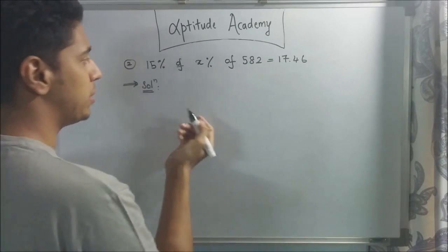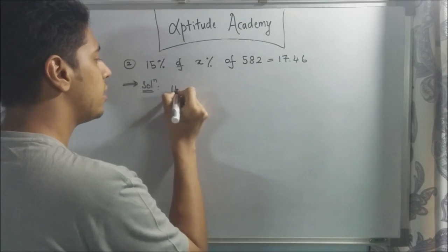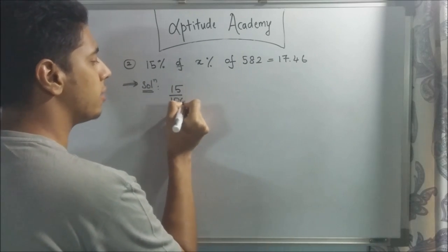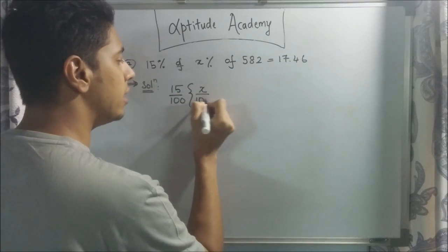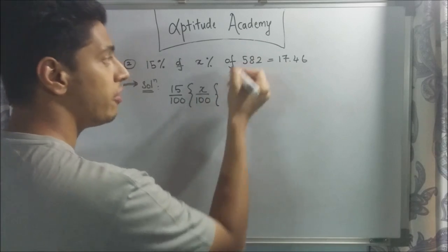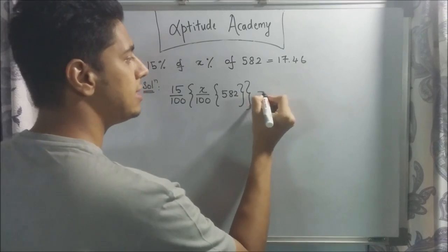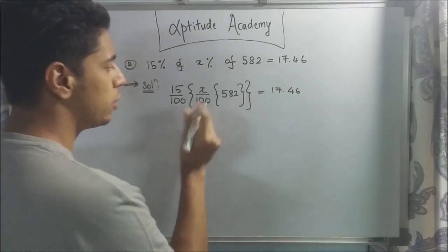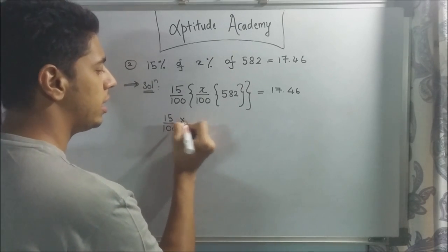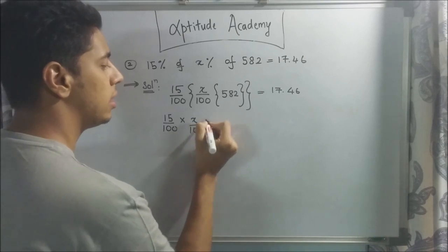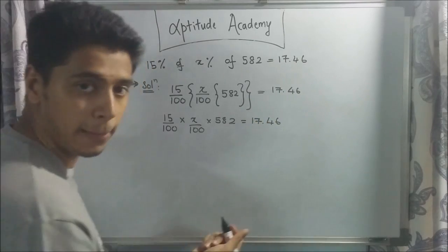The way you do this is write the percentage in terms of what it really is. So 15% is 15/100, and x% is x/100. So: (15/100) × (x/100) × 582 = 17.46. If you remove the brackets, it's multiplication, so 15/100 × x/100 × 582 = 17.46.